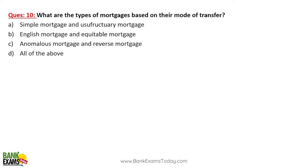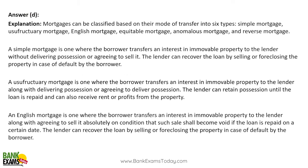What are the types of mortgages? A simple mortgage is one where the borrower transfers an interest in immovable property to the lender without delivering possession or agreeing to sell it. For example, buying a house and paying a monthly EMI — you are transferring an interest in the house to the lender, but there is no agreement to sell the property later.